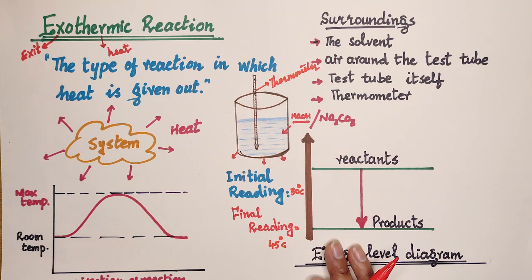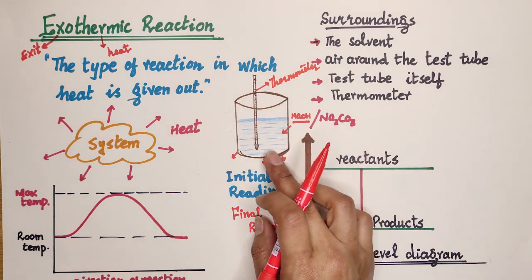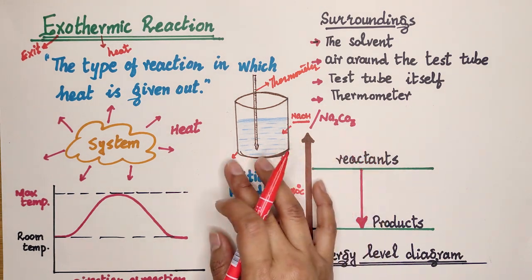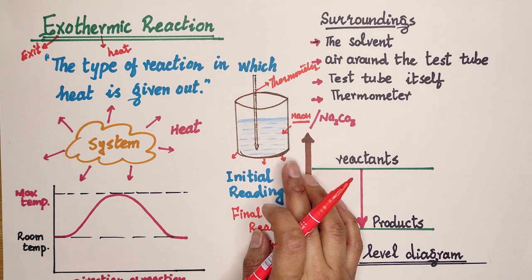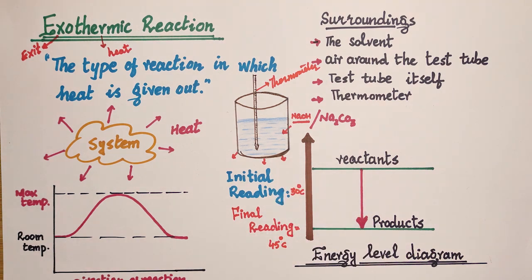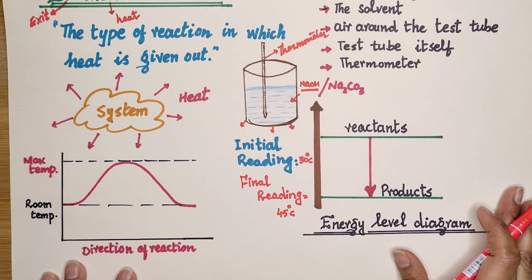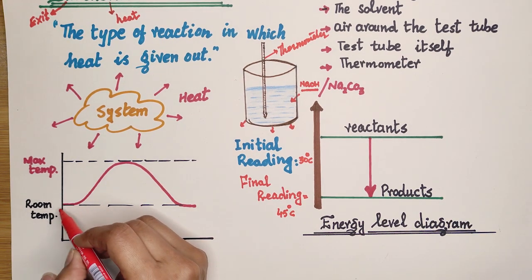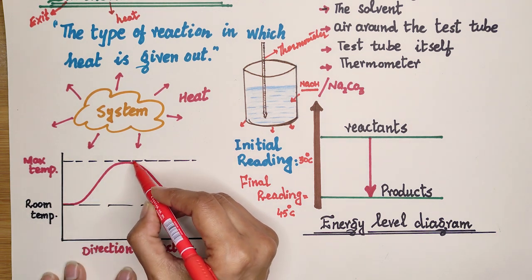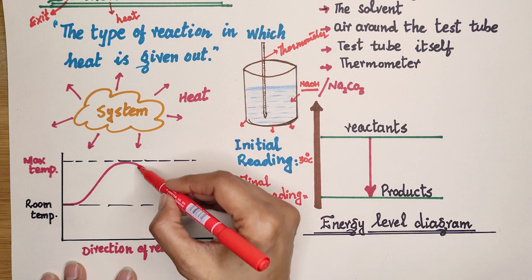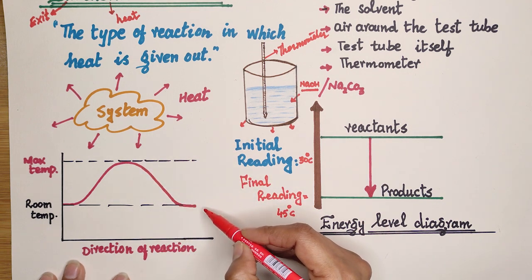There is another way to confirm the reaction is exothermic — by touching the beaker. If it is heated up, then we can say the reaction is exothermic. We can also look at the graph: starting at room temperature, the temperature rises to a maximum and then cools back down.